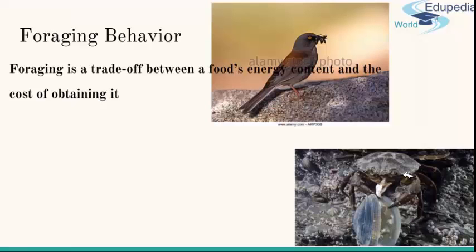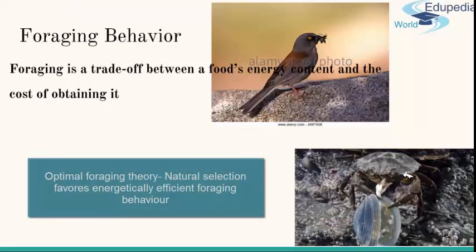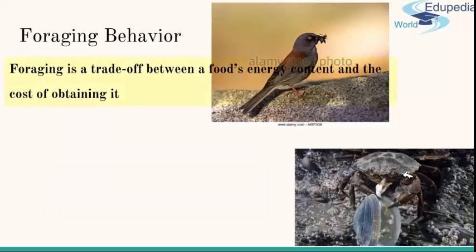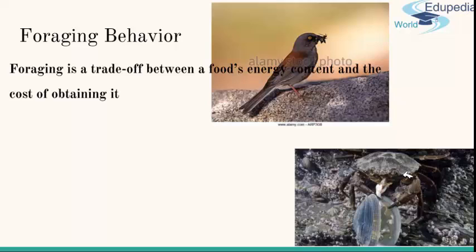Regarding foraging behavior, according to optimal foraging theory, natural selection favors individuals whose foraging behavior is as energetically efficient as possible. Foraging turns out to be a trade-off between a food's energy content and the cost used to obtain that food — the net income must exceed expenditure to be beneficial. In other words, animals generally tend to feed on prey that maximizes their net energy intake per unit of foraging time.